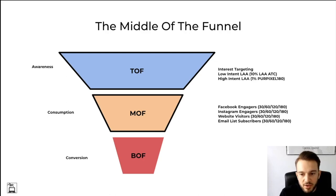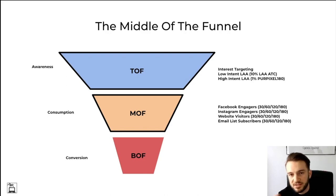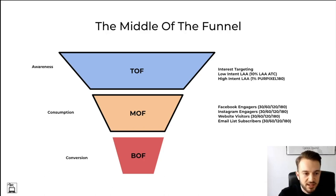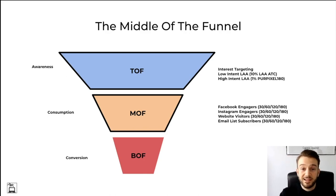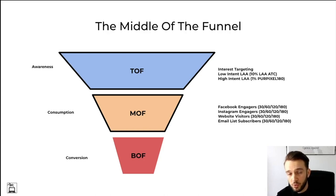For the middle of the funnel, we retarget people that are lukewarm — people already on the store, familiar with the brand, maybe they've liked the Facebook page or commented on an Instagram post. You can also upload the email list — for example, people who signed up via a pop-up offering 10% off. Depending on the size of the audience, you can take Facebook engagement from the last 30, 60, 120, or 180 days. I usually start with 180 days, then as the store grows we can shorten that window.